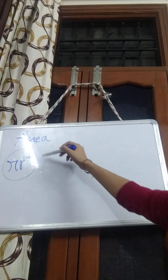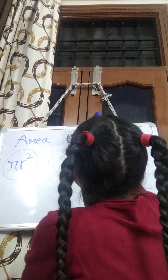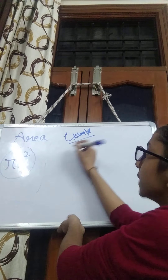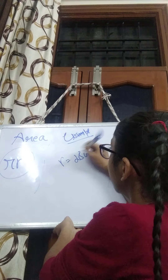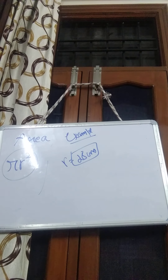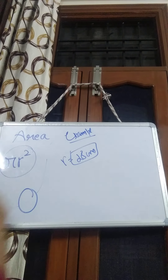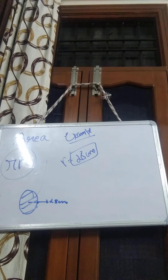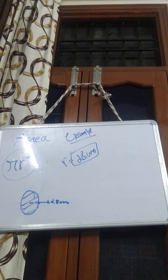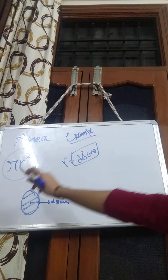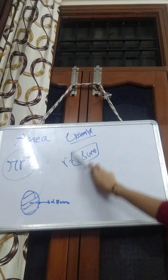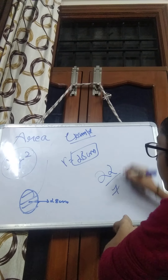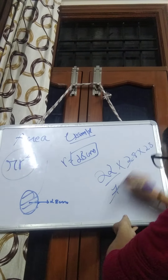Now we will find the area of a circle using the formula πr². I'll take another example. The radius is 28 centimeters and we have to find the area. Let's draw a rough diagram: a circle with center point and radius of 28 cm. Since 28 is divisible by 7, we will use pi as 22/7. So the calculation is 22/7 × 28 × 28.